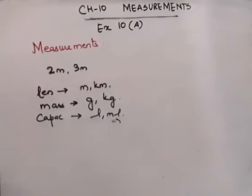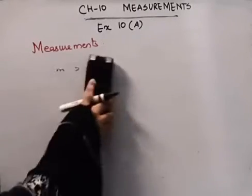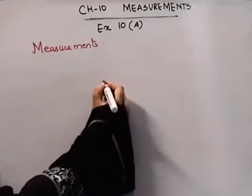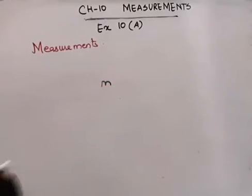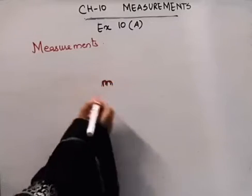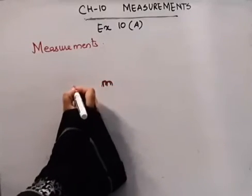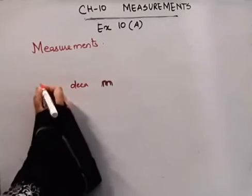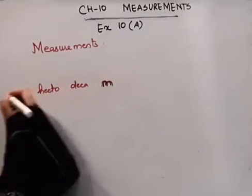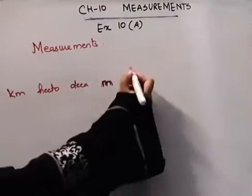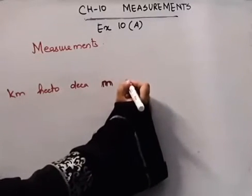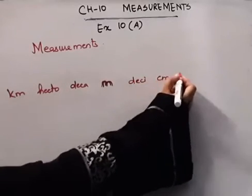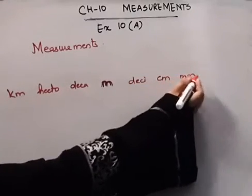Now we will look at the different units of measurement of length. The standard unit is meters. Going upward from meters we have decameters, then hectometers, then kilometers. Going downward we have decimeters, centimeters, and millimeters. So meters is our standard unit with three units on the left side and three on the right.